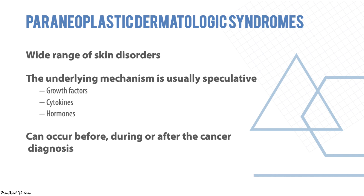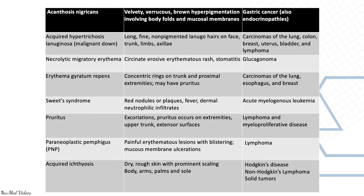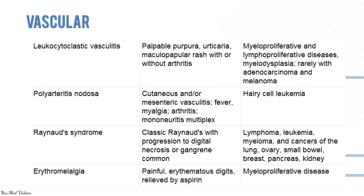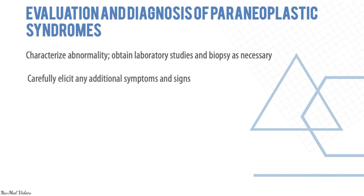A wide range of skin disorders can also occur as paraneoplastic syndromes. The underlying mechanism is not clearly known but is speculated to involve cytokines, hormones, or growth factors, and can occur before, during, or after cancer diagnosis. Examples include Sweet syndrome, paraneoplastic pemphigus, and ichthyosis. Vascular paraneoplastic syndromes include leukocytic vasculitis, polyarteritis nodosa, Raynaud's syndrome, and erythromelalgia.